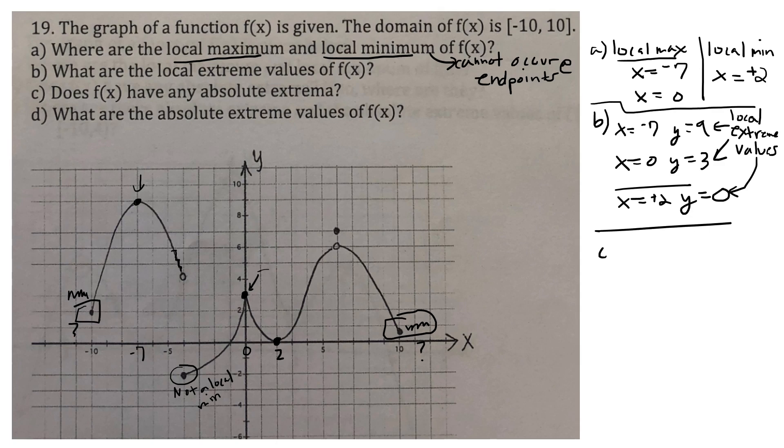Letter C says, does F of X have any absolute extrema? And so, if you have a function who is defined on an interval like this from negative 10 to 10, or any closed interval, and it's bounded, where it doesn't go off to infinity or minus infinity, yes, the function will achieve its absolute max and its absolute min. Now, for absolute, they can occur at the end points.